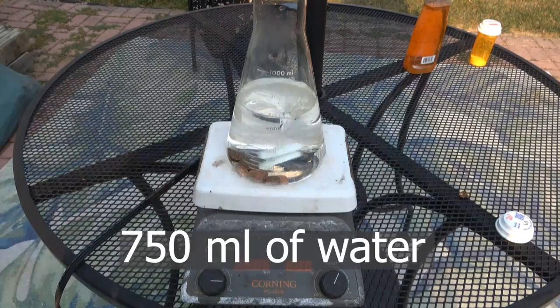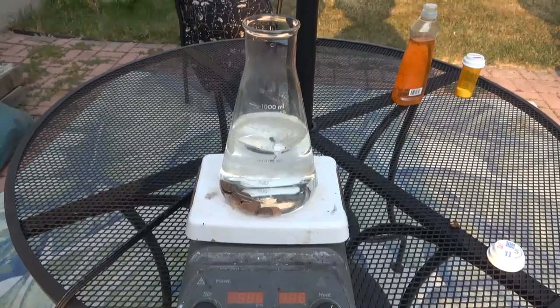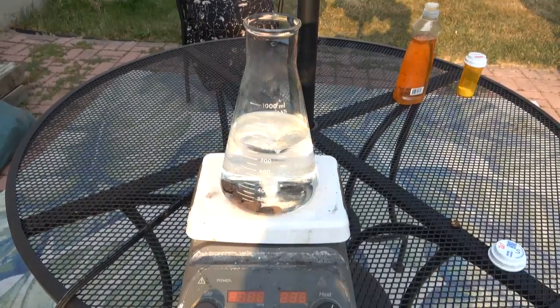I filled an Erlenmeyer flask with 750 milliliters of water and added 8 pennies to it. I'm using a magnetic hotplate to both mix and heat the solution.